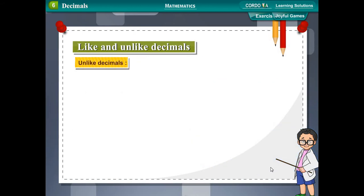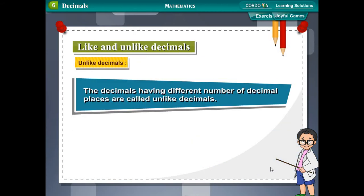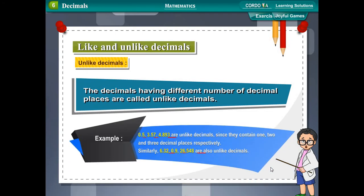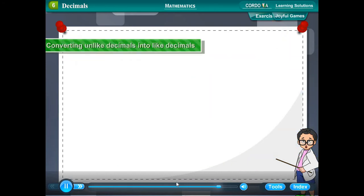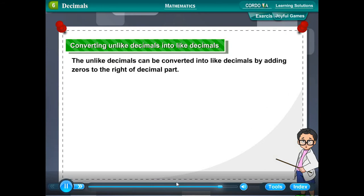Unlike decimals are decimals having different numbers of decimal places. For example, 0.5, 3.57, and 4.893 are unlike decimals since they contain 1, 2, and 3 decimal places respectively. Similarly, 6.32, 0.9, and 26.548 are also unlike decimals. Converting unlike decimals into like decimals: unlike decimals can be converted into like decimals by adding zeros to the right of the decimal part.